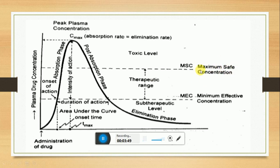Maximum safe concentration is the concentration of the drug above which it shows toxicity or reaches a toxic level. Minimum effective concentration (MEC) is the concentration of the drug in plasma at which the pharmacological response starts and remains throughout the period. The ratio of maximum safe concentration to minimum effective concentration is called the therapeutic range or therapeutic index.